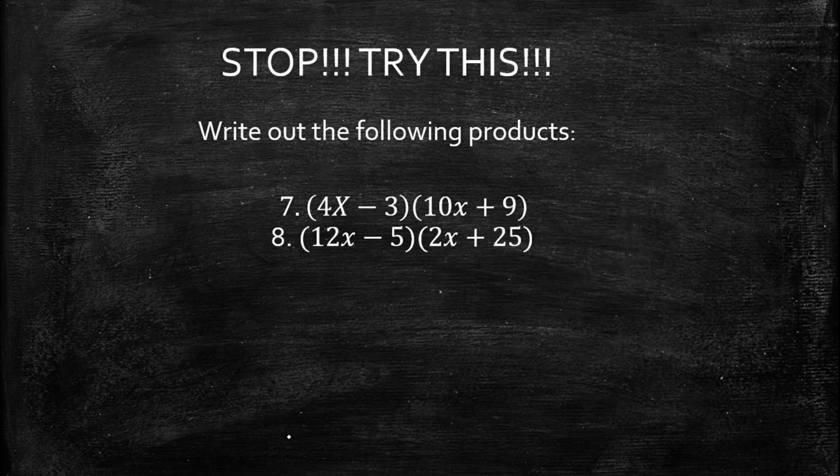Stop and try: write out the following products. Number seven: (4x − 3)(10x + 9). Number eight: (12x − 5)(2x + 25).